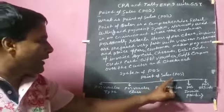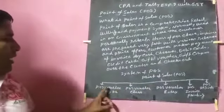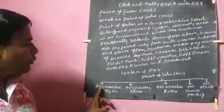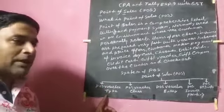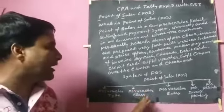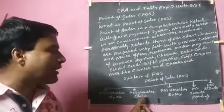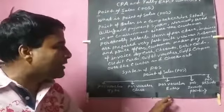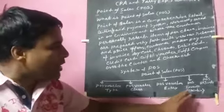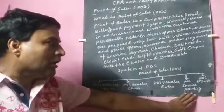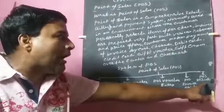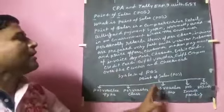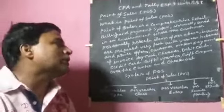The Point of Sale process in Tally includes: first, POS voucher type creation and selection; second, POS voucher classes creation and selection; third, POS voucher entry creation; fourth, POS invoice printing; and finally, the POS register. This is the complete process for maintaining Point of Sale accounts in Tally.